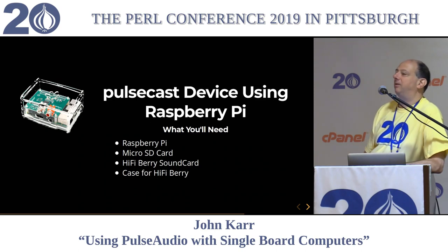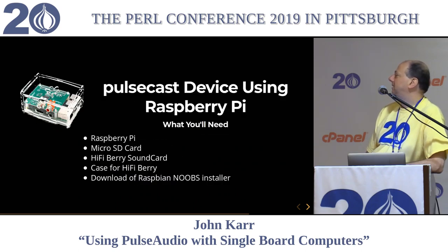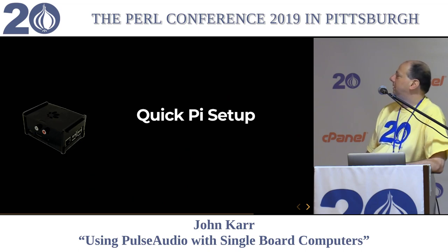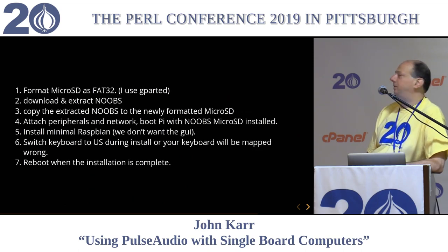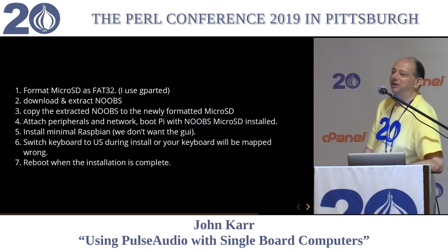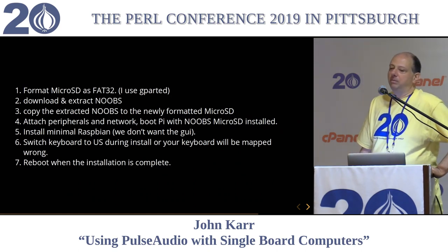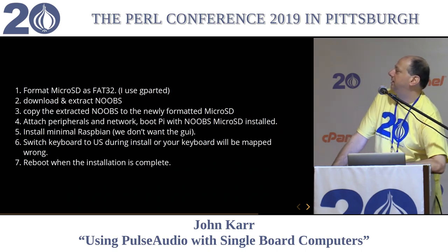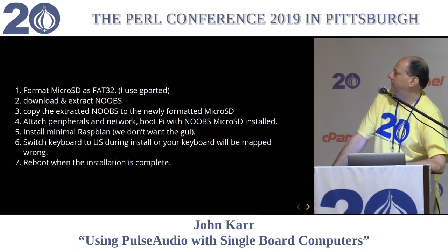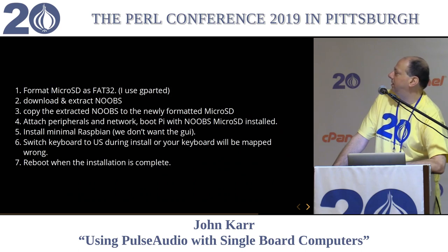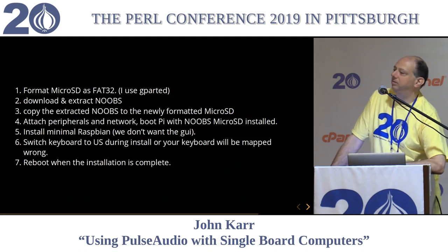If it's your first time, you'll want to download the Raspbian NOOBS installer. Here are some quick Pi setup steps: format your micro SD as FAT32 — I use GParted — download and extract NOOBS, put it on the newly formatted micro SD, attach your peripherals and network to the Pi, install the NOOBS micro SD, pick the minimal install from NOOBS, make sure you switch to the US keyboard or you'll not be very happy, and reboot when the installation is complete.